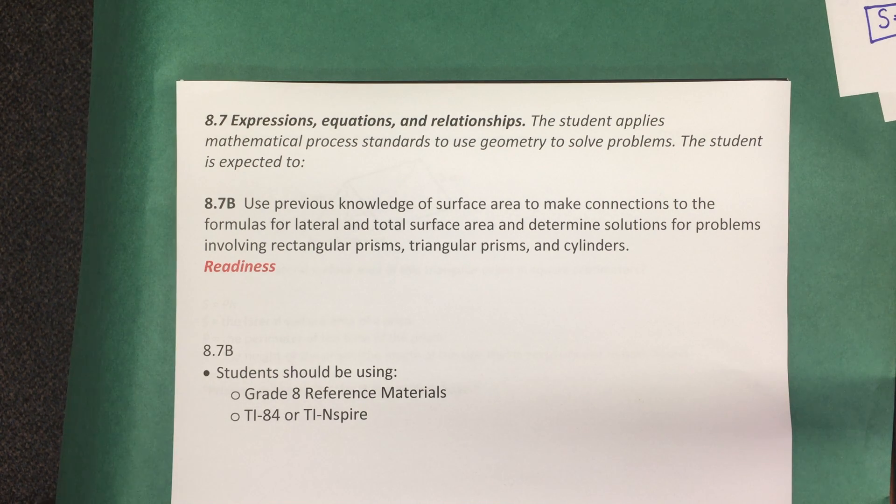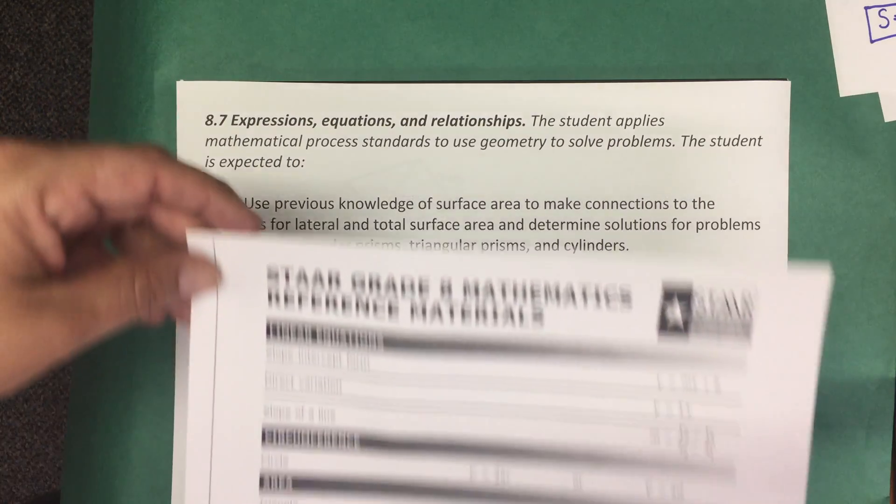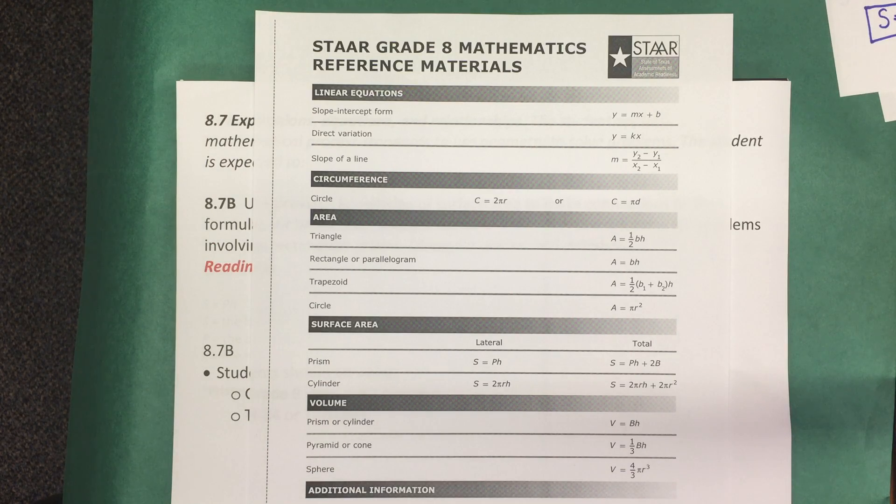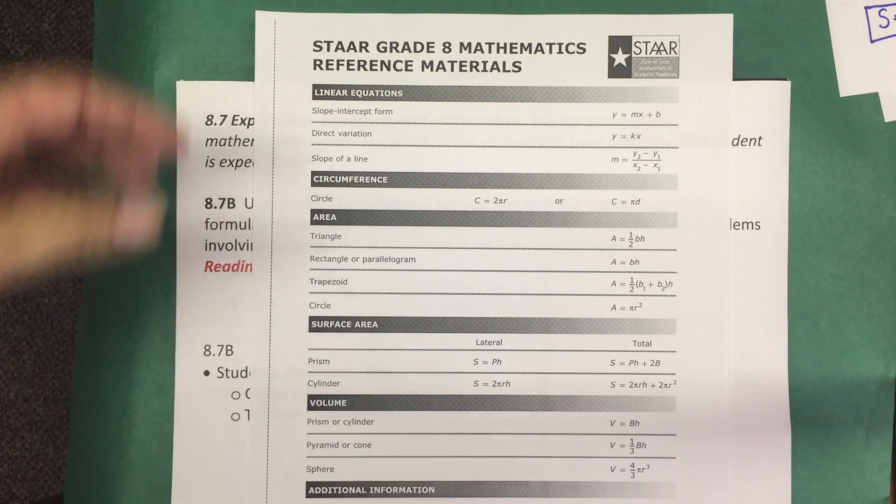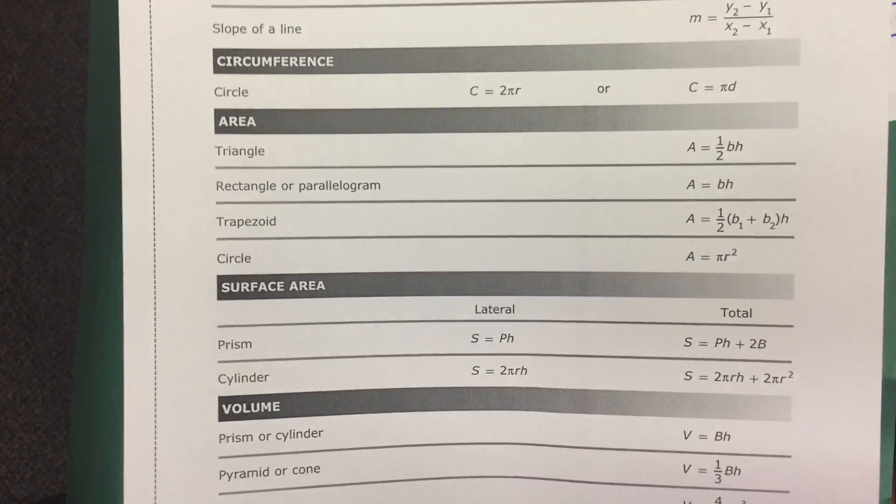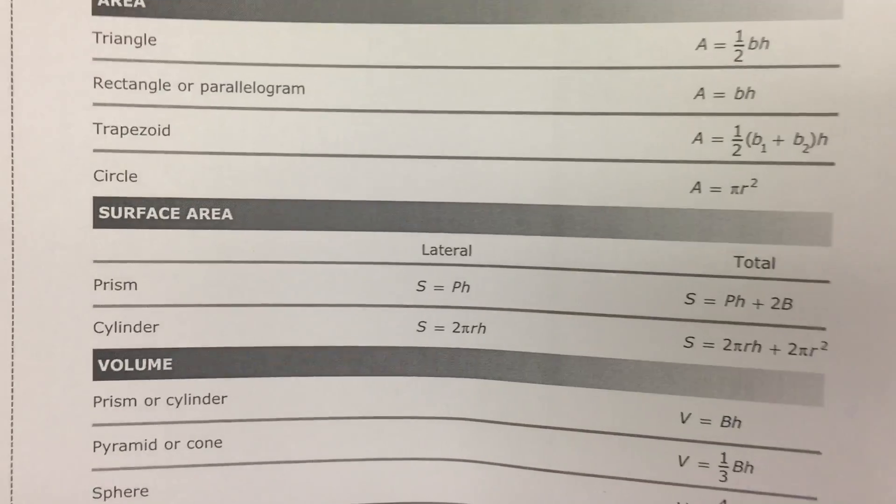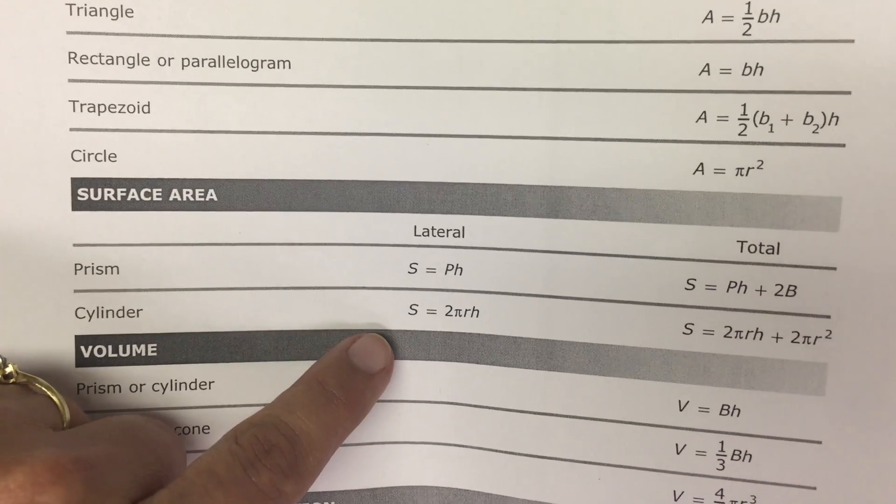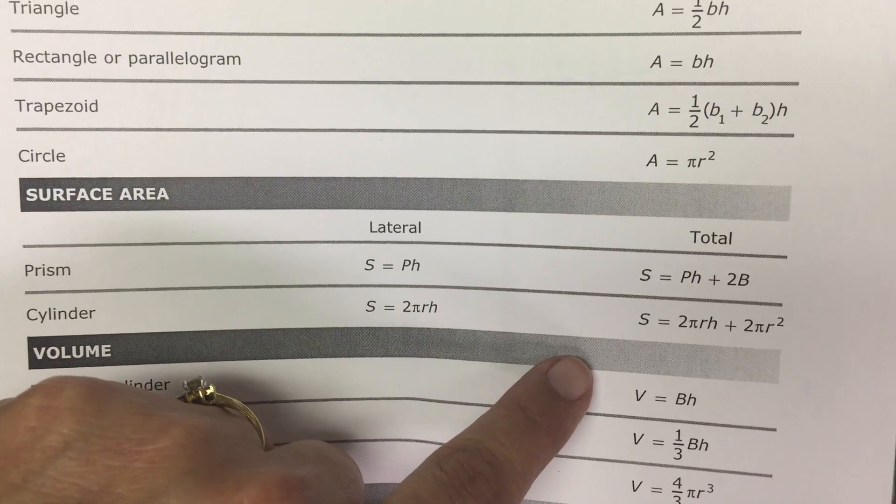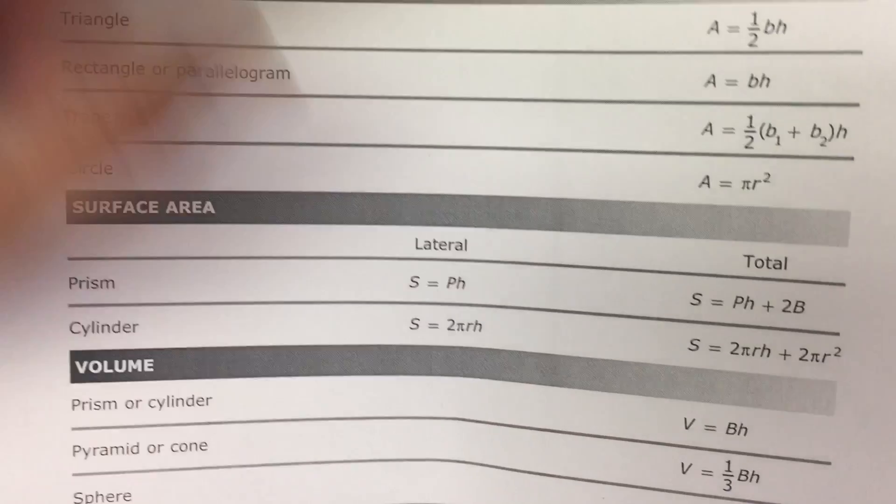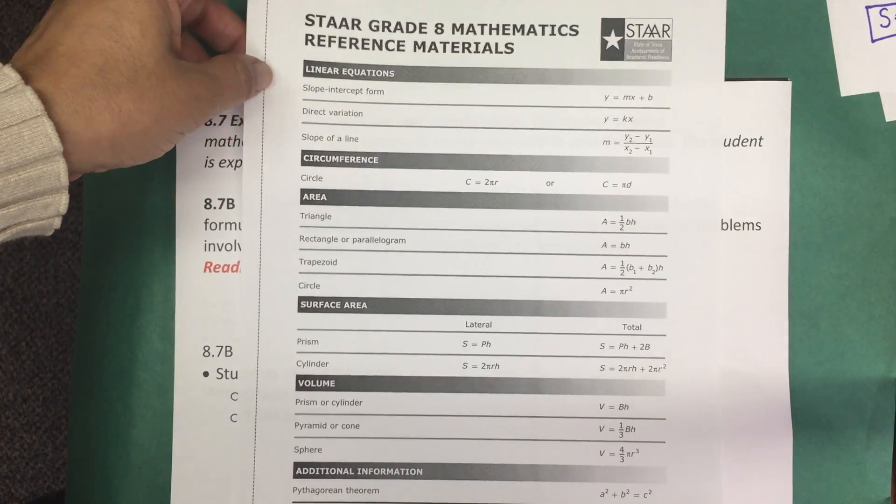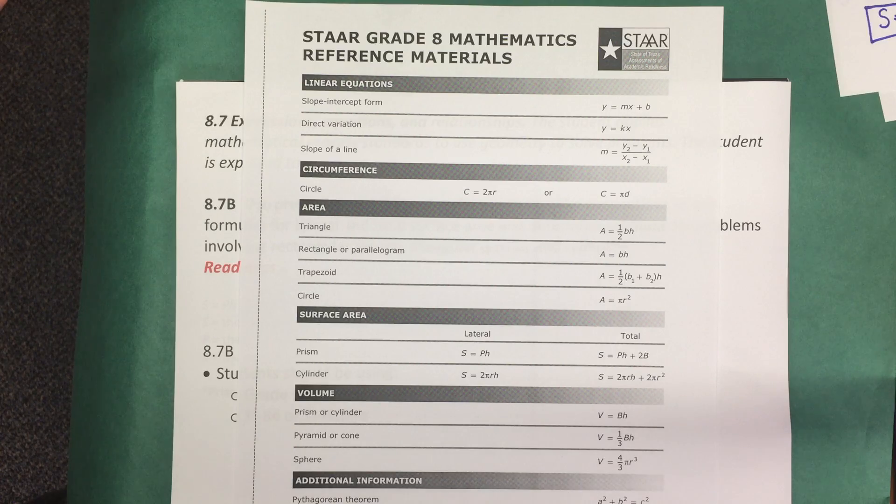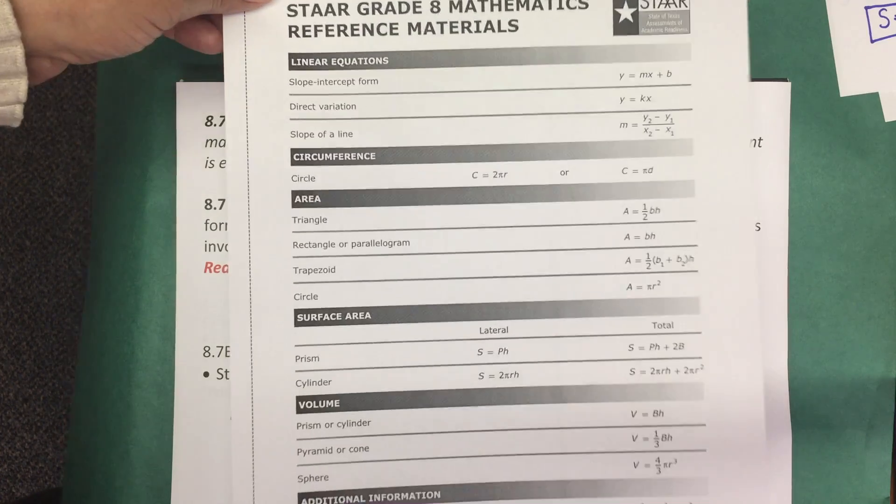When teaching this standard to your students, it's important to have available for them the grade 8 reference material from the STAR assessment. On this sheet the formulas for surface area are provided for both the prism and a cylinder. The lateral surface area as well as the formula for the total surface area are provided. We want students to use and reference this sheet in class so that on the day of the STAR test they're comfortable with this reference material sheet and know how to use it and read the formulas.